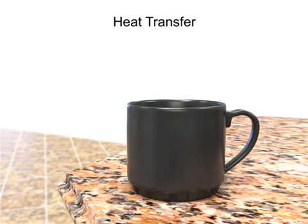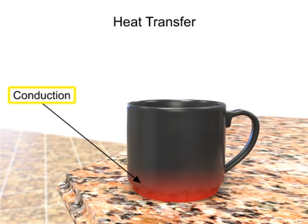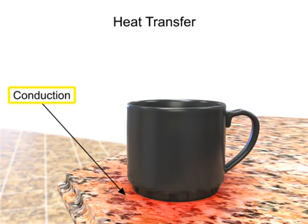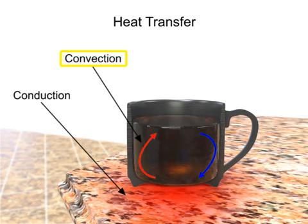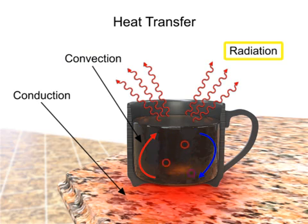The process of heat transfer also occurs when an object cools. If a mug of hot coffee is left standing on a cold kitchen countertop, its temperature will gradually decrease as heat is lost. The heat energy dissipates by conduction through the mug to the tabletop, by convection as the liquid rises, cools, and sinks, and by the radiation of heat into the surrounding air.